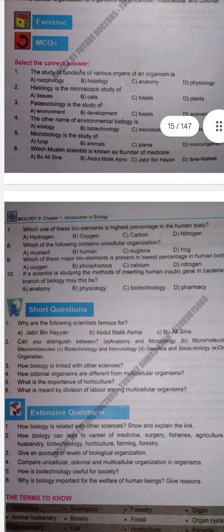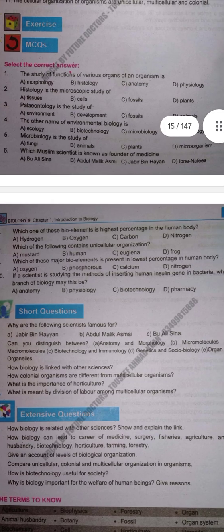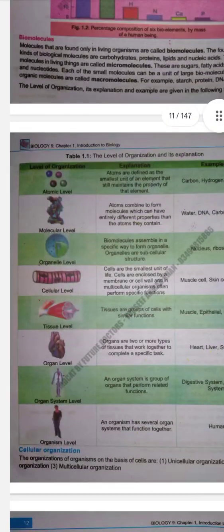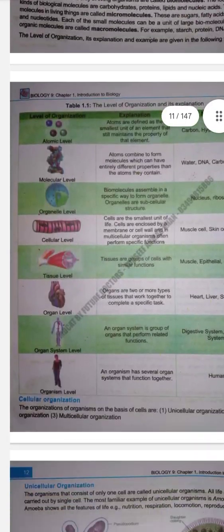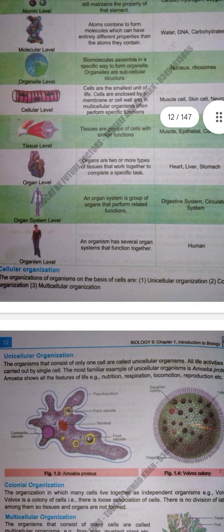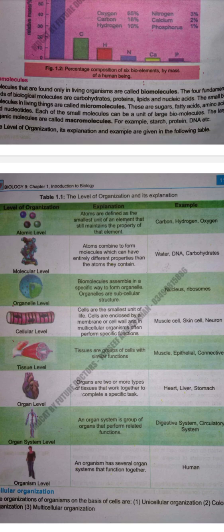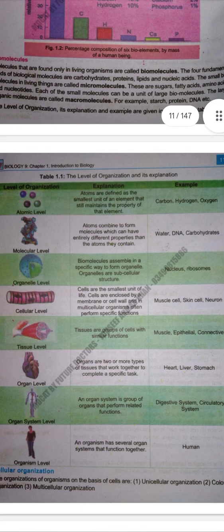Next is organ and organelles — this is our level of organization. Molecules are combined in a specific way to form organelles, which are sub-cellular structures. Various tissues are combined in a specific way to form organs.